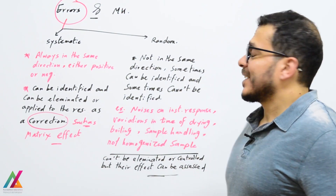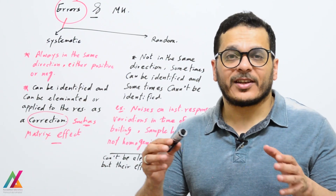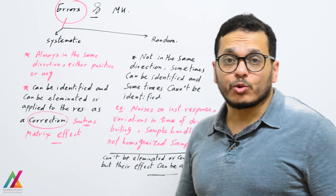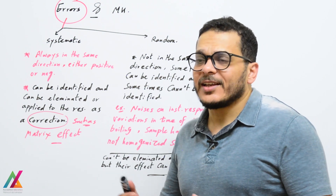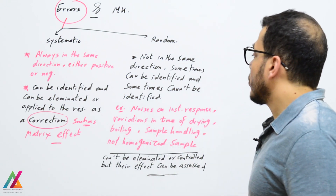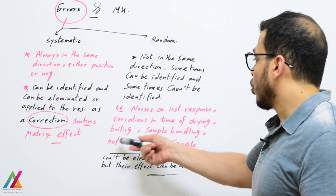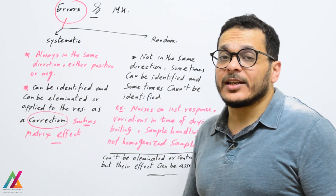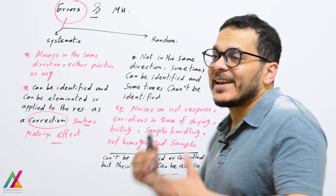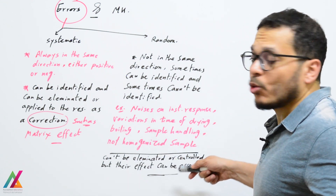Random errors, unlike systematic errors, will not be in the same direction — they change all the time. They cannot be eliminated or controlled because they can come from the environment, such as temperature or moisture, from instrument noise, or variation in drying time, boiling time, sample handling, or even poor homogenization of the sample. All of these can affect the measurement result but cannot be eliminated or controlled.